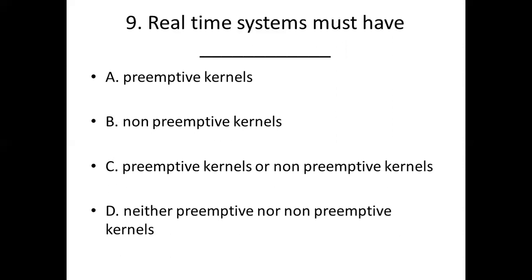Ninth bit: Real time systems must have dash. Option A: Primitive kernels. Option B: Non-primitive kernels. Option C: Primitive kernels or non-primitive kernels. Option D: Neither primitive nor non-primitive kernels. Answer: Option A — Primitive kernels.